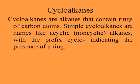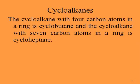Cycloalkanes are alkanes that contain rings of carbon atoms. Simple cycloalkanes are named like their non-cyclic counterparts, with the prefix 'cyclo' indicating the presence of a ring. For example, the cycloalkane with four carbon atoms in the ring is called cyclobutane, and the one with seven carbon atoms is called cycloheptane.